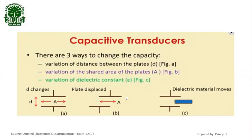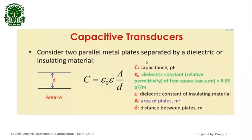By changing the area, or the distance between the plates, or the insulating dielectric medium, we can change the capacitance. Using this property, we can produce a change in capacitance that is used in the capacitive transducer. By connecting the capacitor as one arm of a Wheatstone bridge and giving a supply, the change in capacitance can be converted to an output voltage.